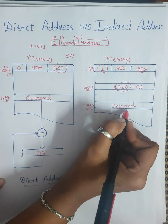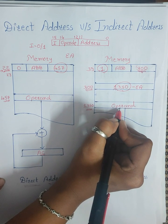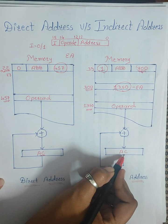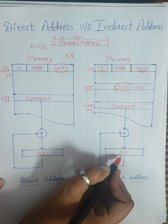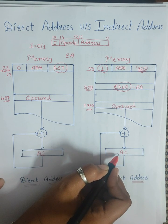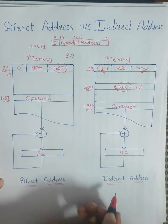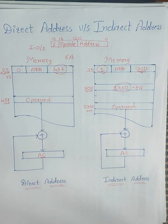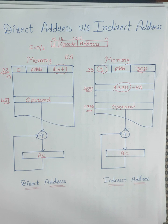When we go to that location — 1350 — we find the actual operand. The addition is performed with this operand along with the data in the accumulator, and the final answer is again stored in the accumulator. That is indirect addressing mode. I hope you understood what is direct addressing mode and what is indirect addressing mode. Thank you.